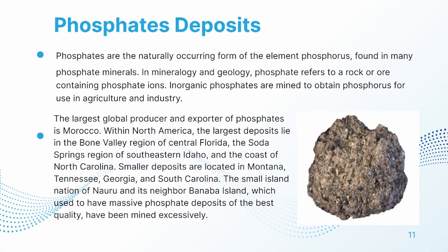Non-clastic phosphates are the naturally occurring form of the element phosphorus, found in many phosphate minerals. In mineralogy and geology, phosphate refers to a rock or ore containing phosphate ions. Inorganic phosphates are mined to obtain phosphorus for use in agriculture and industry. The largest global producer and exporter of phosphates is Morocco. Within North America, the largest deposits lie in the Bone Valley region of Central Florida, the Soda Springs region of southeastern Idaho, and the coast of North Carolina.